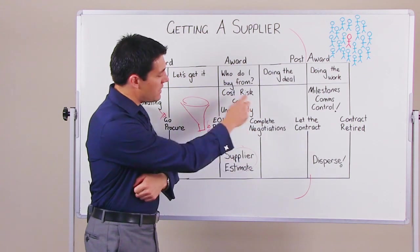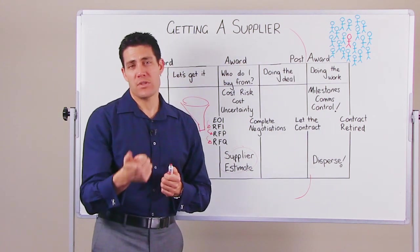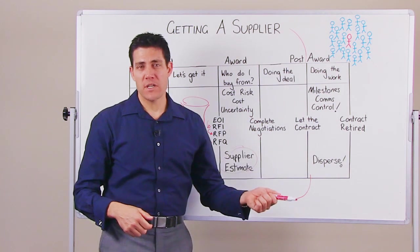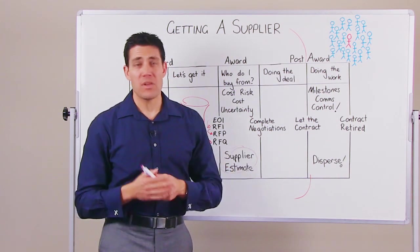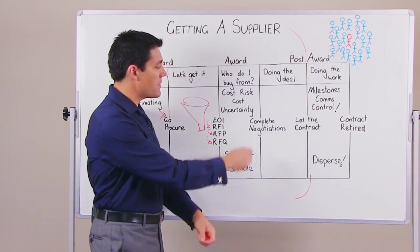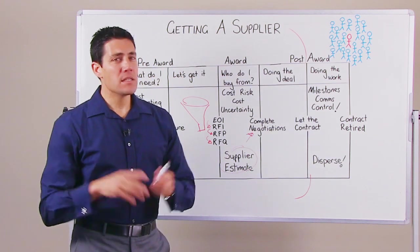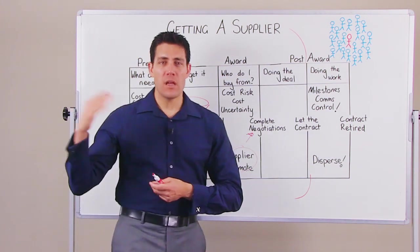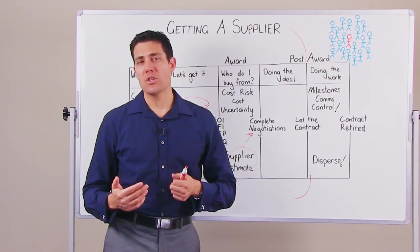In this particular phase, you're also determining the right commercial vehicle to use. Is it going to be a cost plus a percentage of cost? Is it going to be a firm fixed price? Is it going to be a contract somewhere in the middle, maybe like a cost plus an incentive fee? This is the time to work that out and to enter into the negotiations with your supplier. It's not always just about here's the effort, here's the cost, this is what the price is.